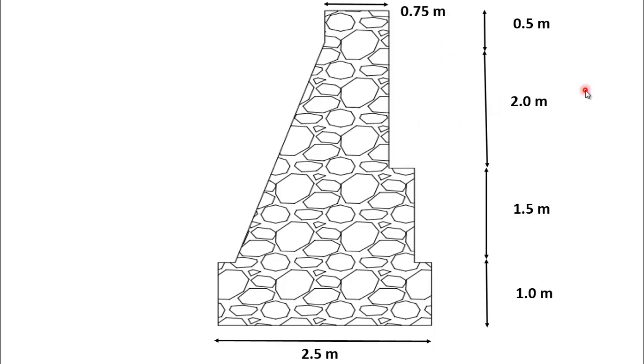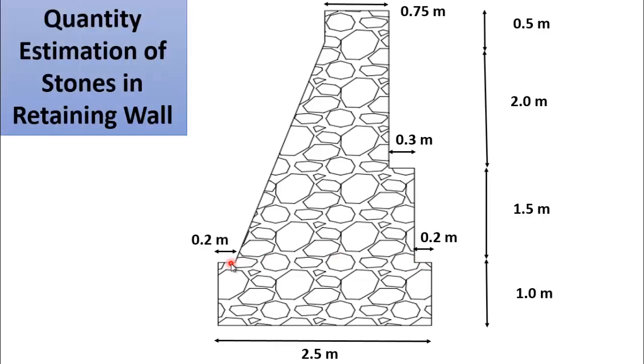Top width is 0.75 meter. This middle offset is 0.3 meter and this lower offset is 0.2 meter on each side. And it is required to estimate the quantity of stones required for this retaining wall.